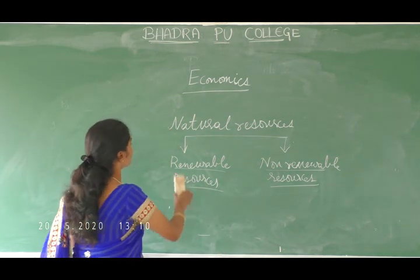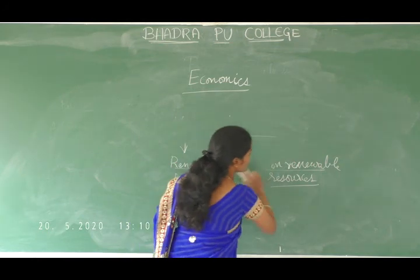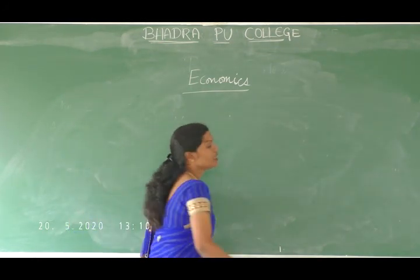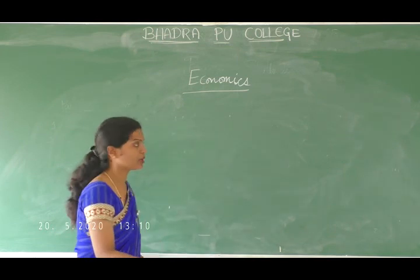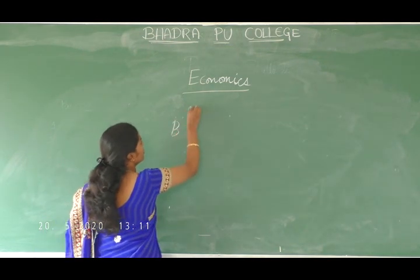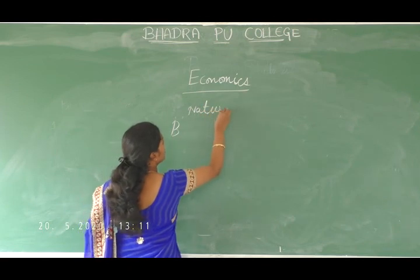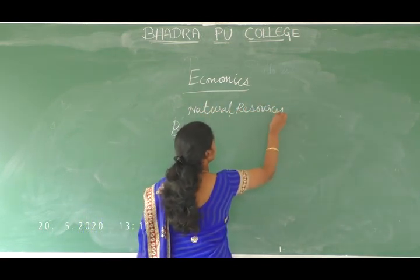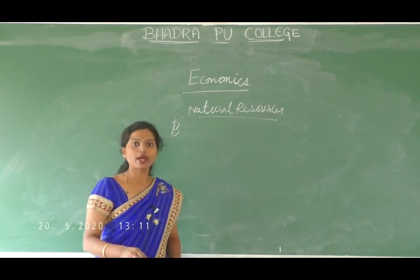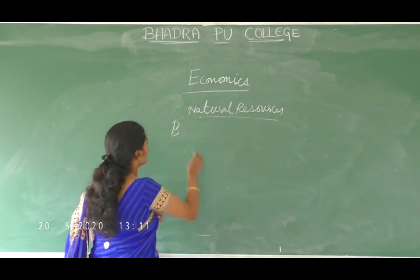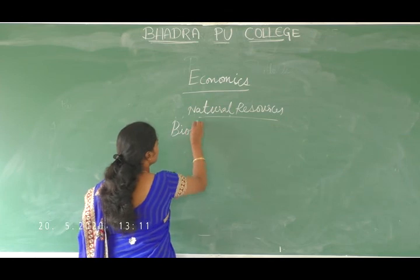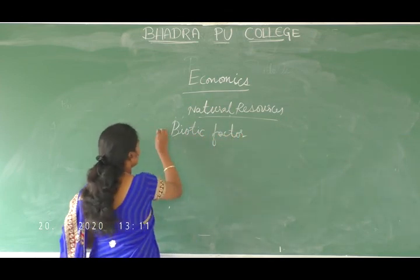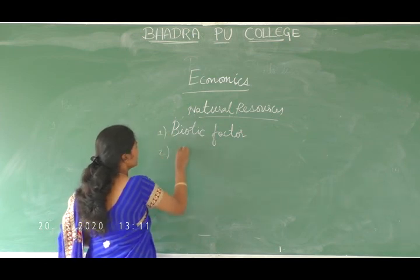We have another classification of natural resources. Natural resources can also be divided into two types: biotic factors and abiotic factors.